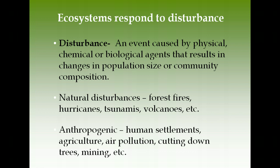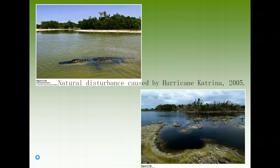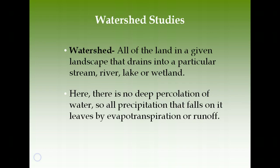Natural disturbances are from Mother Nature: forest fires that start naturally, hurricanes, tsunamis, and volcanoes. An example image shows a nice coastal water area before and two days after a hurricane made landfall — demonstrating how the erosion came through and vegetation in the background was lost.